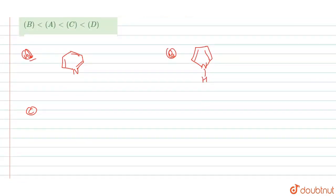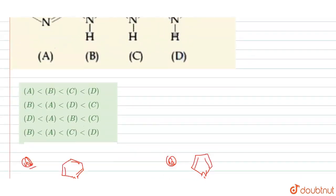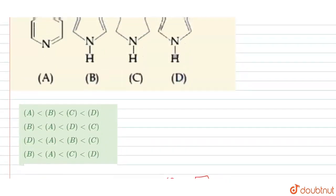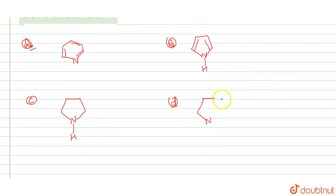Option C has a nitrogen atom with an H attached. Option D has two nitrogen atoms, with pi bonds and an H group, making it a more complex structure.